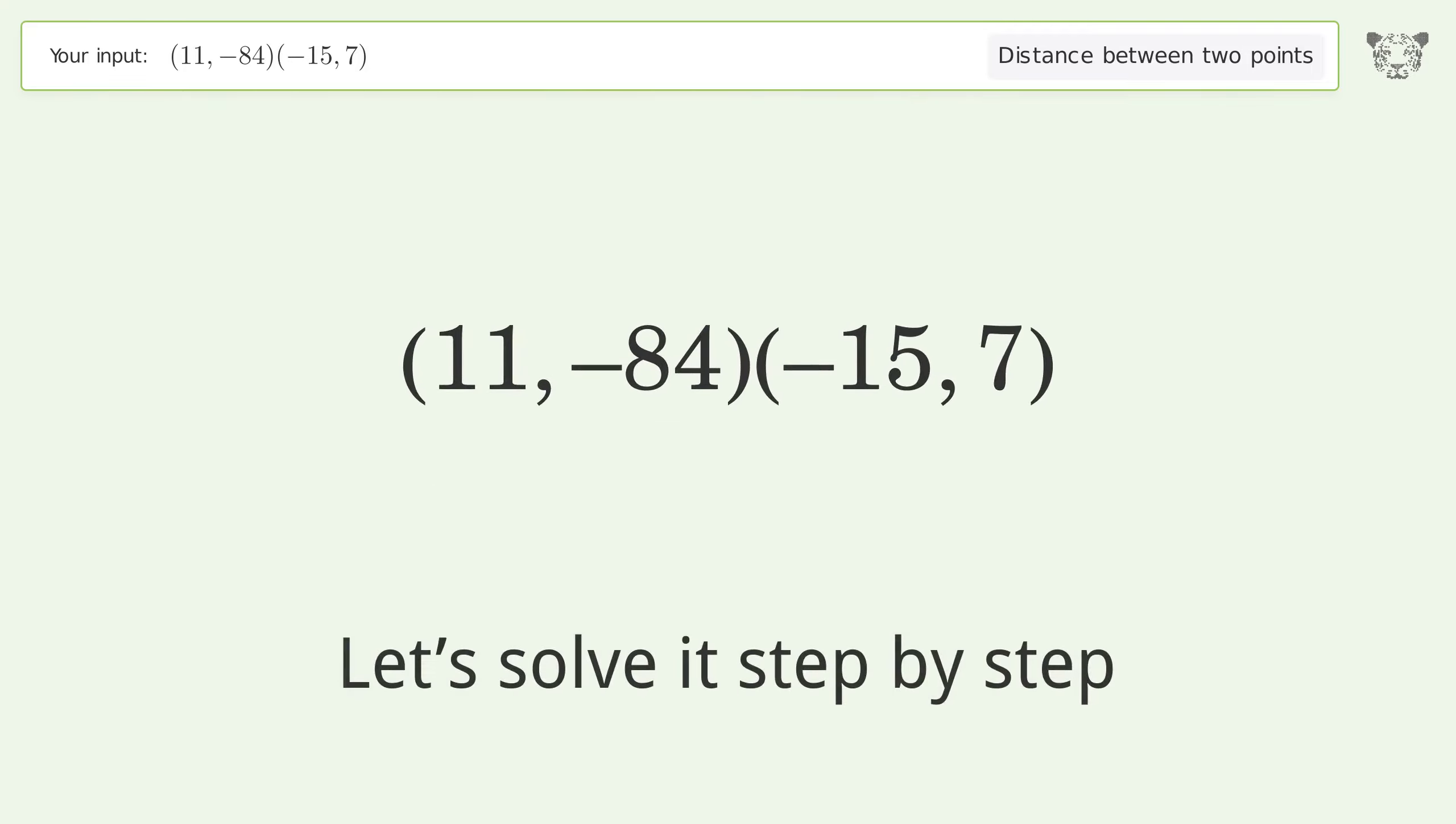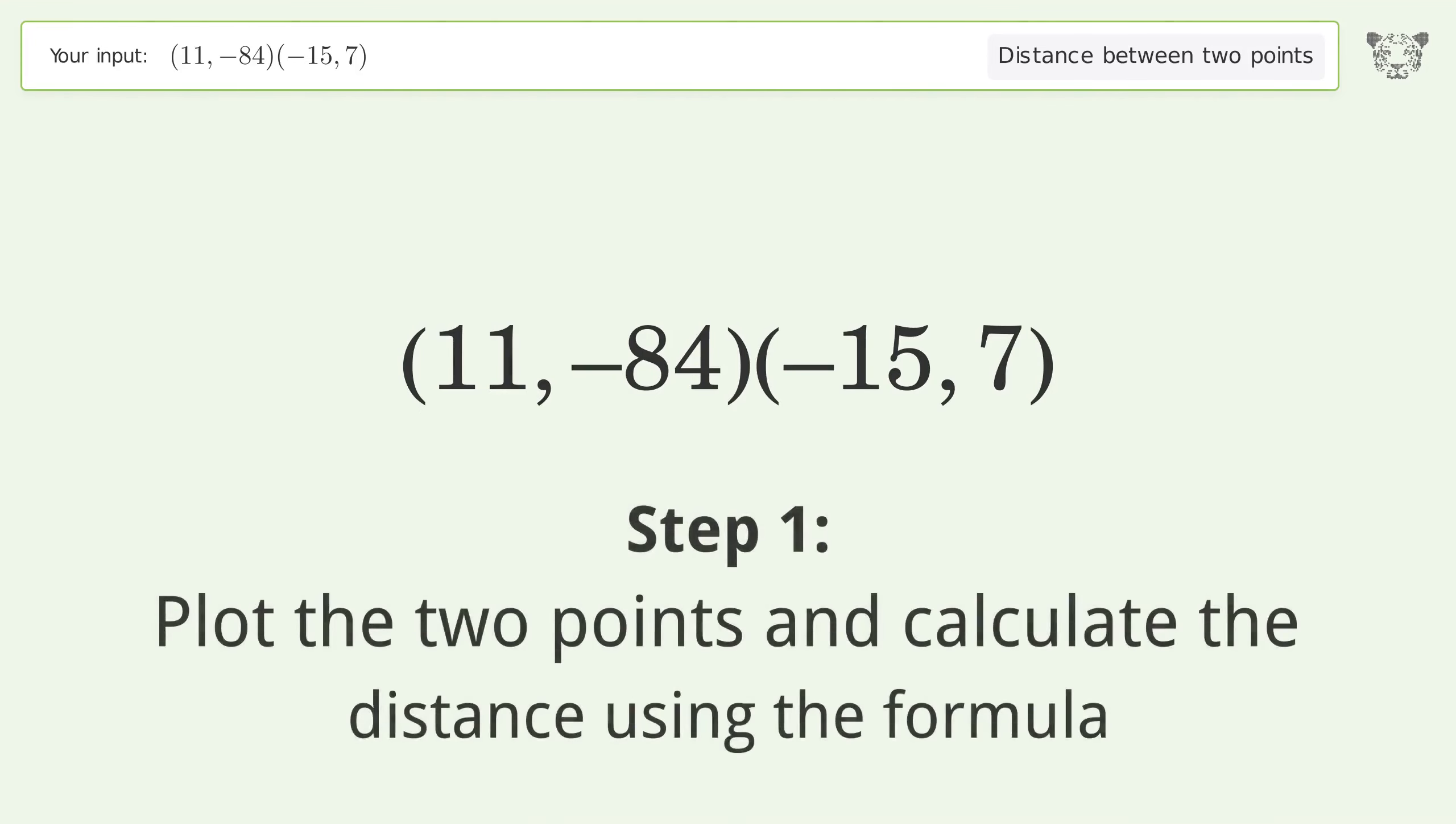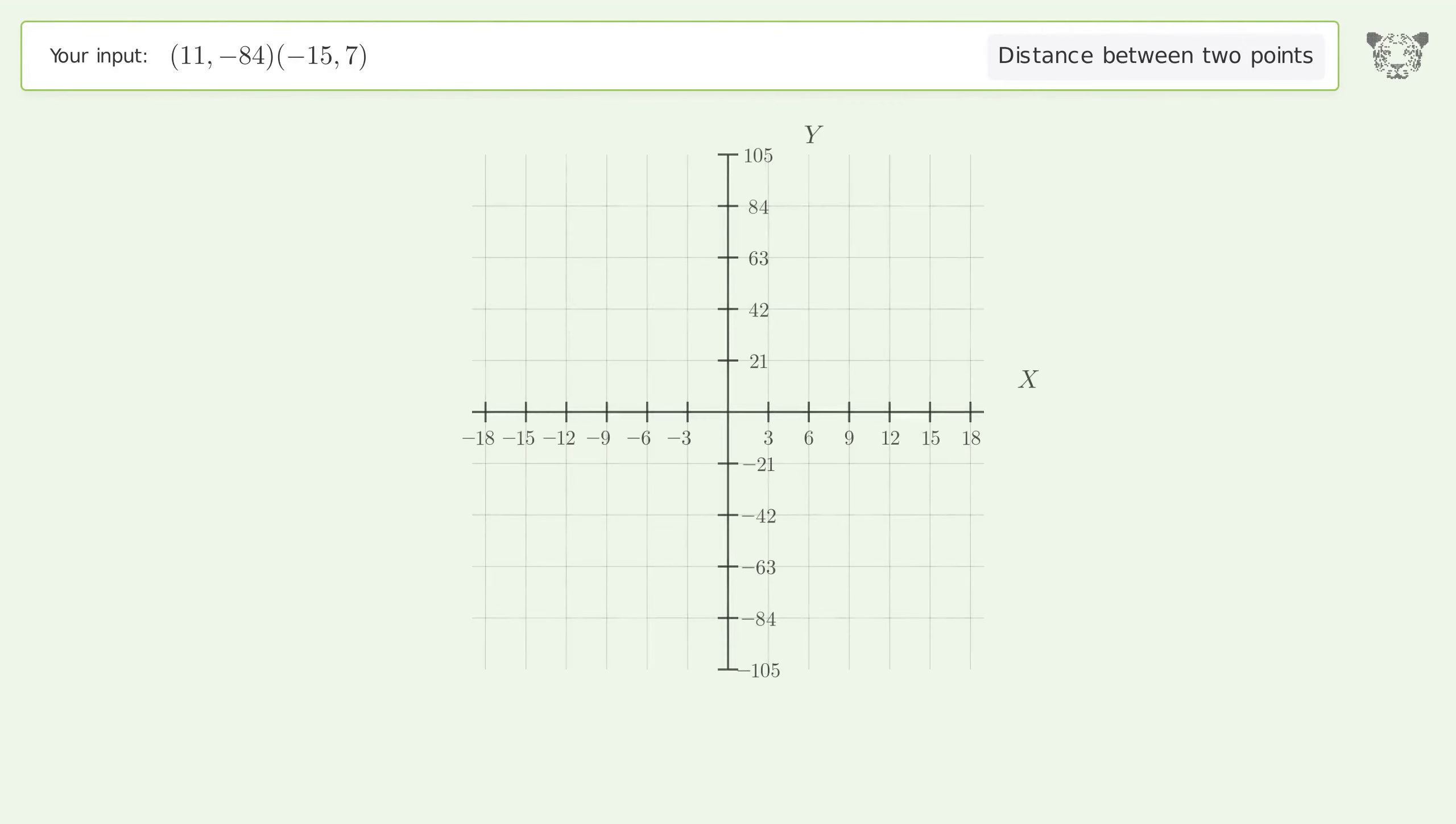Let's solve it step by step. Plot the two points and calculate the distance using the formula. The coordinates of point 1 are x1 equals 11 and y1 equals negative 84. The coordinates of point 2 are x2 equals negative 15 and y2 equals 7.